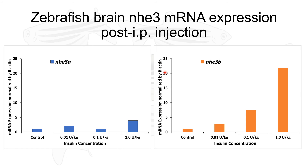In the brain, where no prior information was available, we also observed that with increasing insulin concentration there was an increase in the expression of both NHE3A and NHE3B from the 0.01 to 0.1 to 1 unit per kilogram insulin concentrations. However, there is a decrease in NHE3A normalized by beta actin between the 0.01 and 0.1 concentration before an increase at the 1 unit per kilogram concentration, which warrants further investigation.